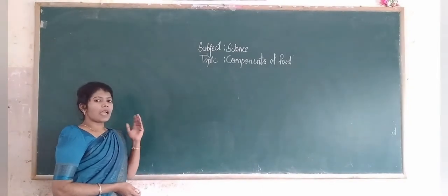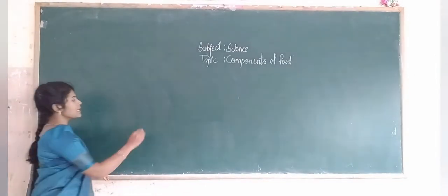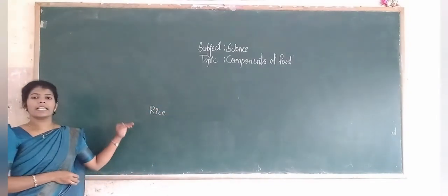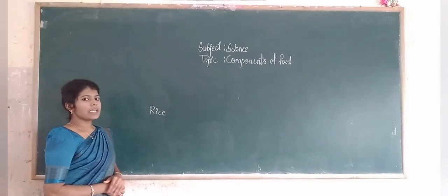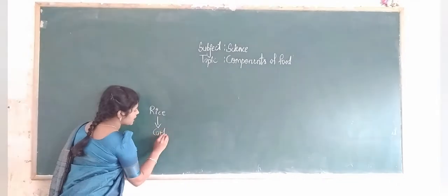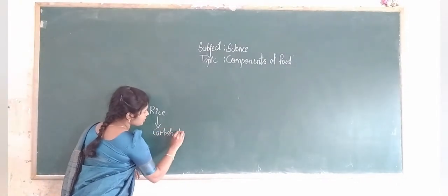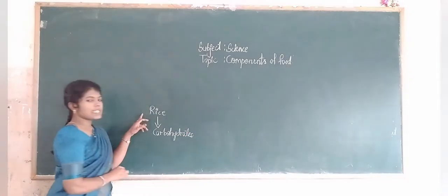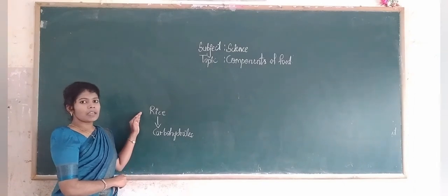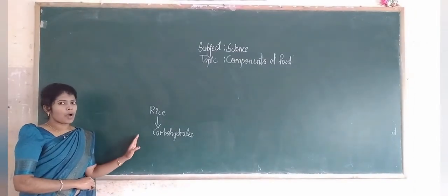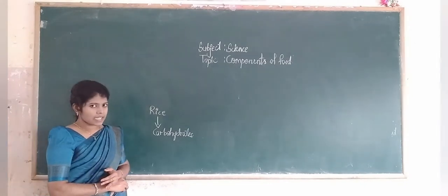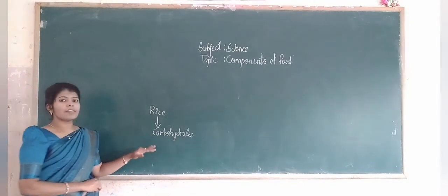In a similar way, if we have a particular food item, for example, if I have rice and we are eating rice continuously, what happens? Rice is rich in carbohydrates. If we continuously consume only rice, the carbohydrates in our body keep increasing and the other nutrients get decreased.